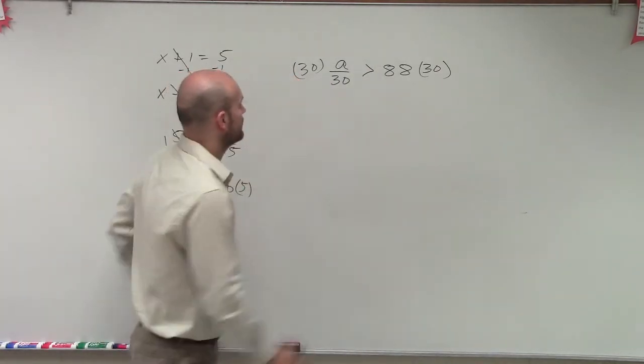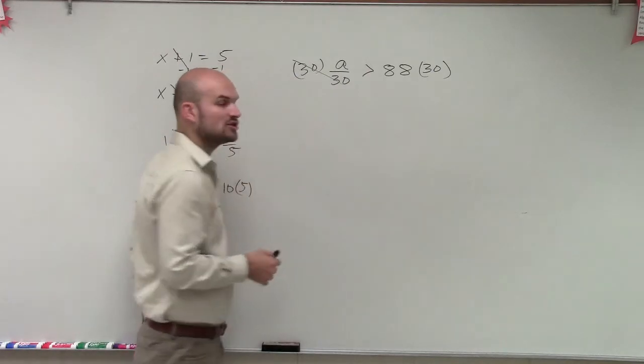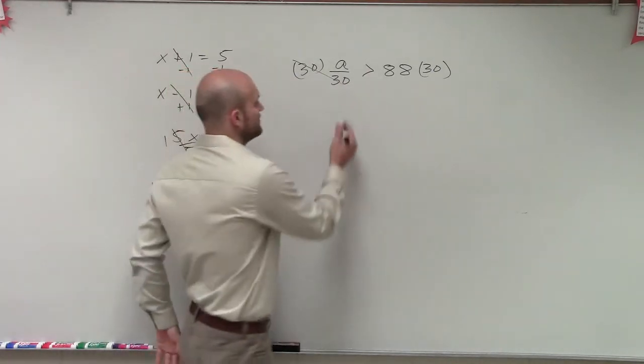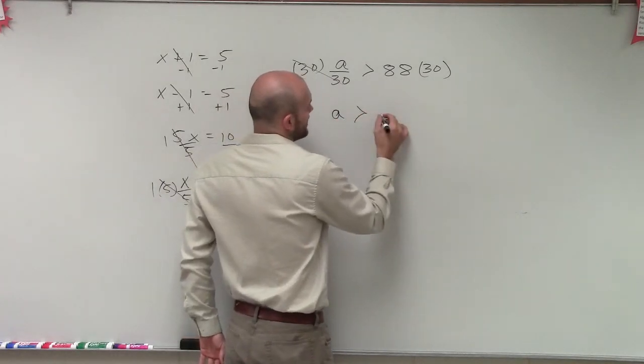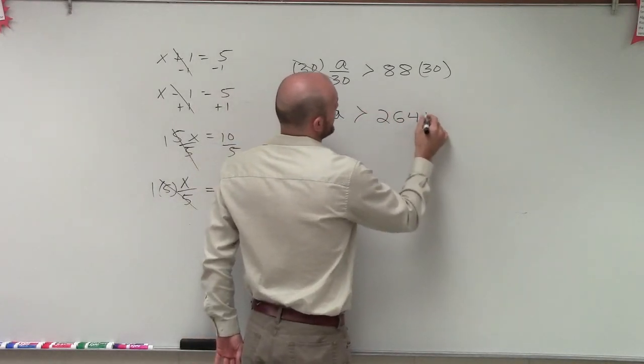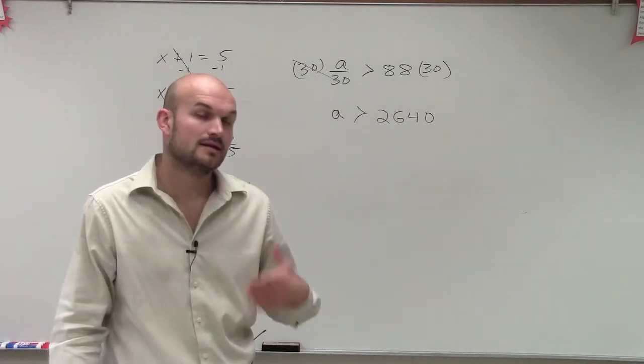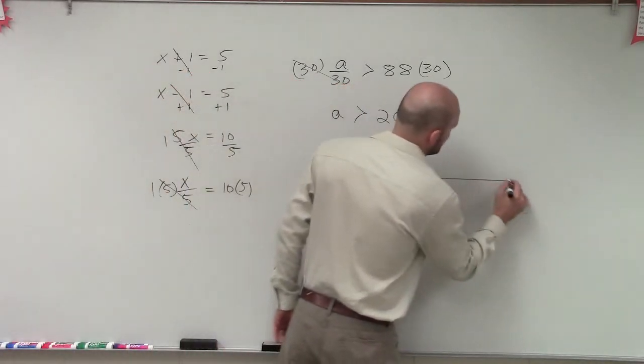So here, when I multiply my 30, that's going to now divide to 1. And 1 times a is just going to leave us with a. And that's going to be greater than 2,640. So now I need to represent this by using a line graph. So I'm going to make a nice little line graph.